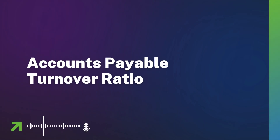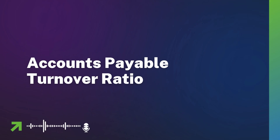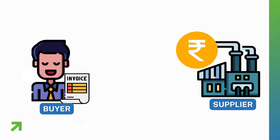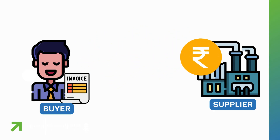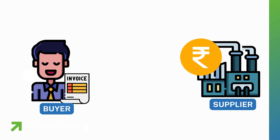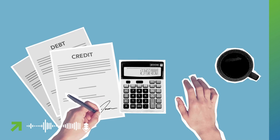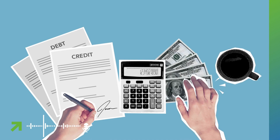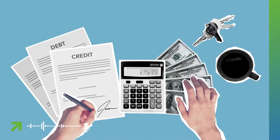Accounts Payable Turnover Ratio is a metric that helps us understand how many times a business pays off its accounts payable during a given period. A higher accounts payable turnover ratio may indicate that the company has a comfortable cash position, enabling it to pay off its suppliers in a timely fashion.